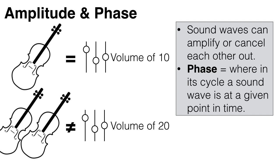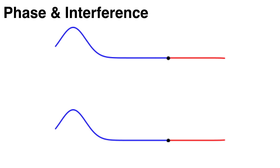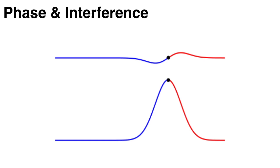The phase details where in its cycle a sound wave is at a given point in time. When two sound waves are out of phase with each other, they cancel each other out completely.